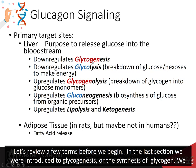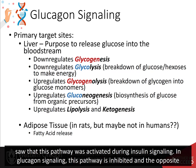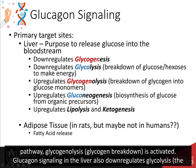Let's review a few terms before we begin. In the last section, we were introduced to glycogenesis, or the synthesis of glycogen. We saw that this pathway was activated during insulin signaling. In glucagon signaling, this pathway is inhibited, and the opposite pathway, glycogenolysis, is activated.